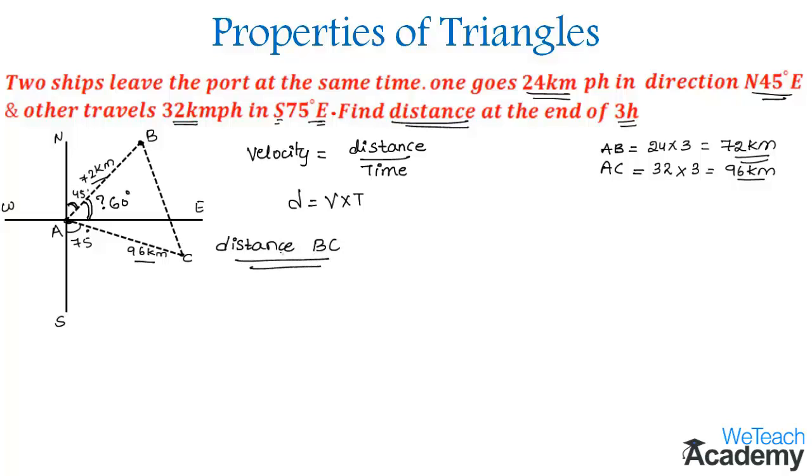In order to find, let us write the angles first. So according to the diagram we get the first angle, that is angle NAB is equal to 45 degrees, and the next angle would be angle CAS which is equal to 75 degrees. And the angle A which can also be represented as angle BAC which is equal to 60 degrees.